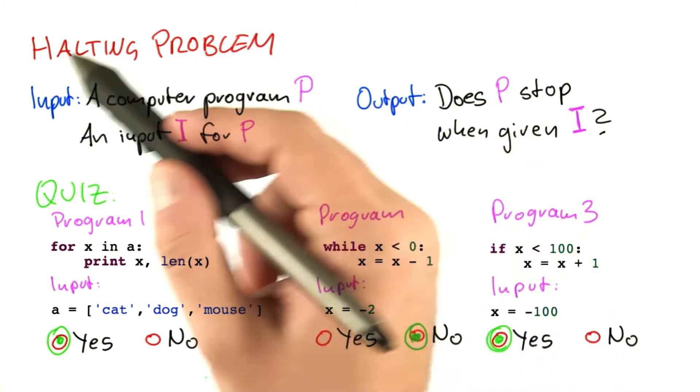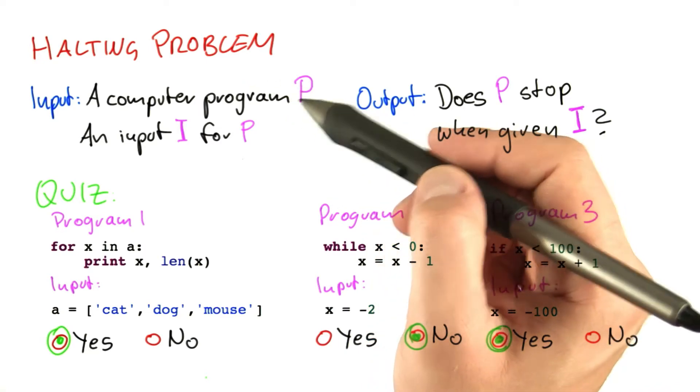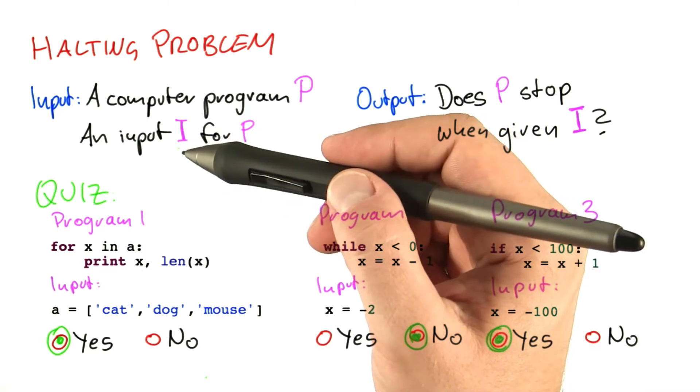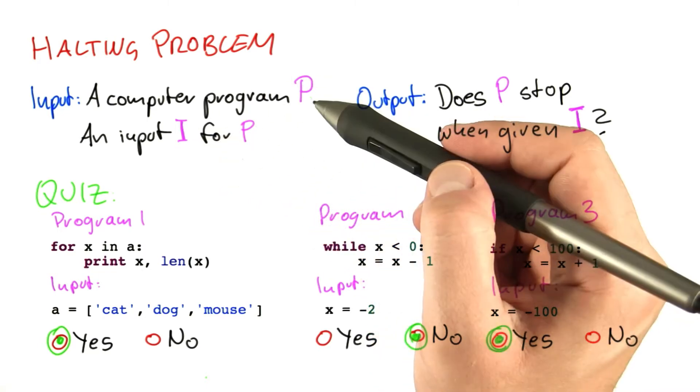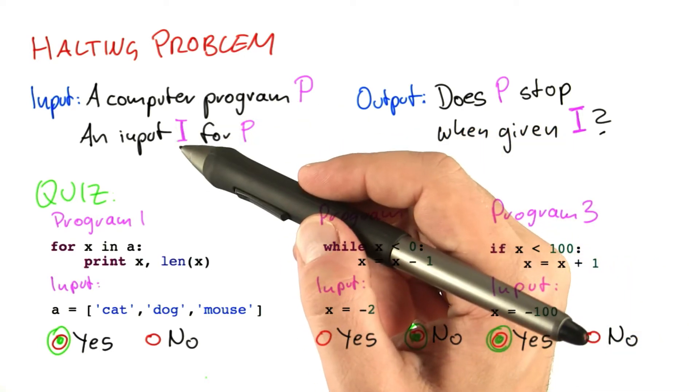What if we had an algorithm that could solve the halting problem for any computer program and any input? That would actually be immensely useful, for example, in software testing or debugging. You would just write your code and then ask the algorithm, does this code go into an infinite loop at some time?